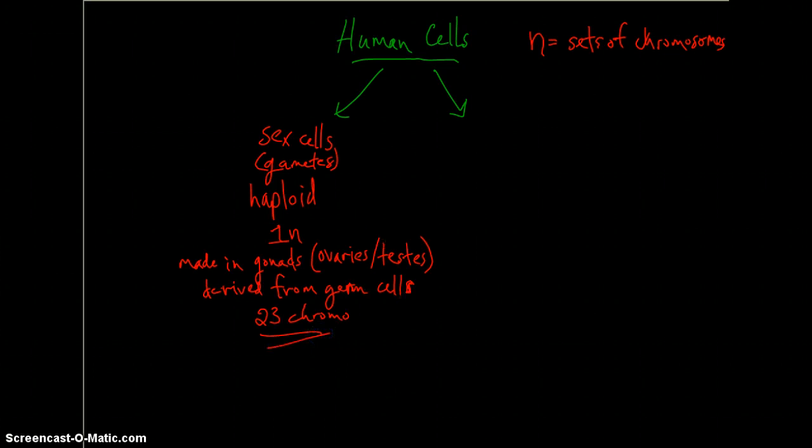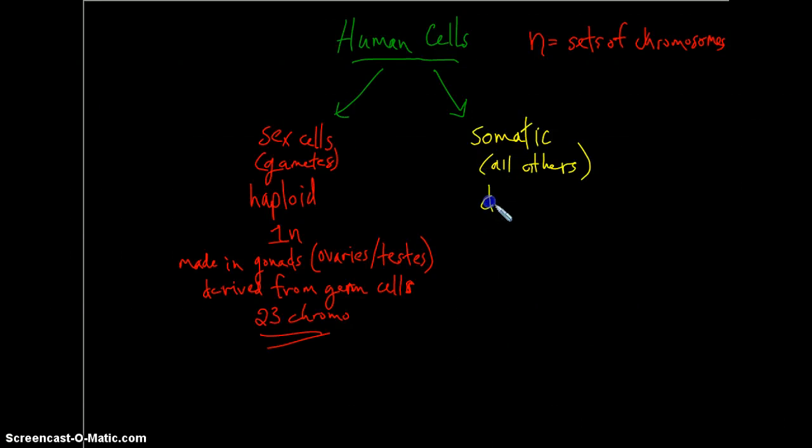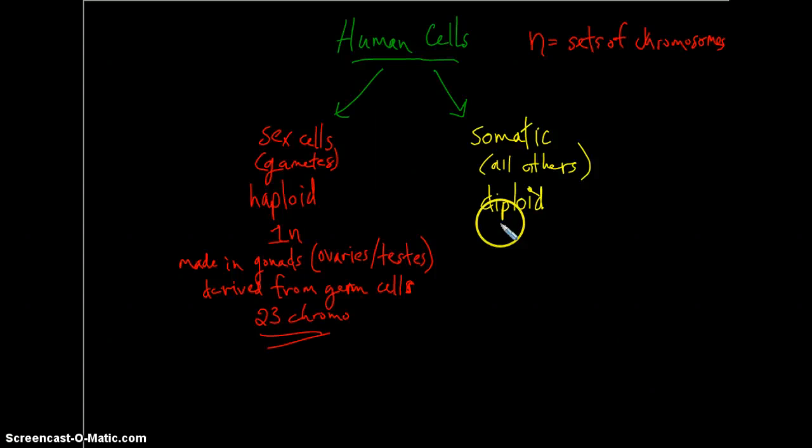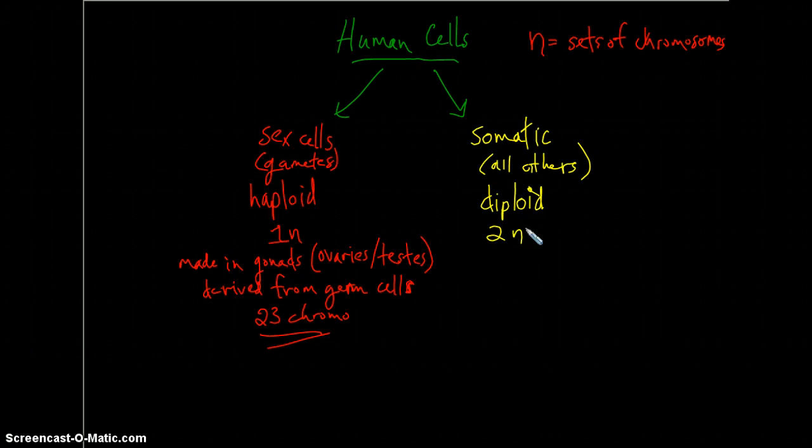Now, the other type of cells are the somatic cells. Somatic cells are basically anything that's not a sex cell or gamete. So you can say all the others. It's sort of a motley crew, but they have some basic characteristics. They tend to be diploid. There are some anucleate cells that don't have nuclei in them, but they tend to be diploid. Diplo means double, so they have two sets of chromosomes. That's represented with 2N.